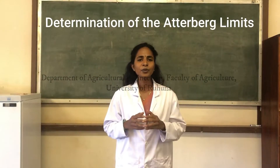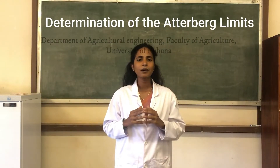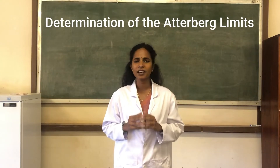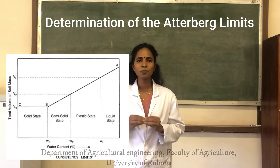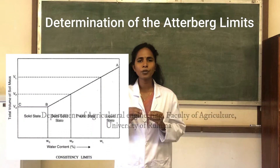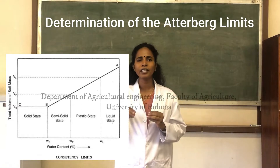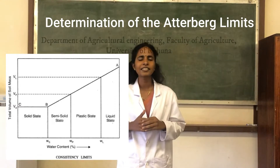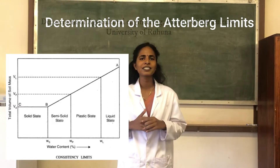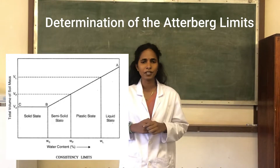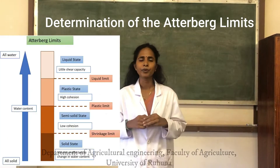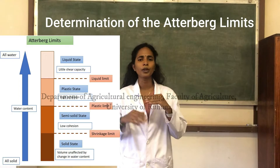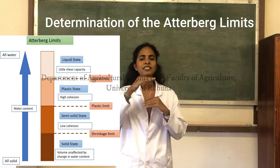When the liquid state soil is dried, there comes a point where the soil becomes plastic — it is no longer able to flow freely like a fluid. The boundary water content at this point is identified as the liquid limit, which lies between the liquid and the plastic state of soil.